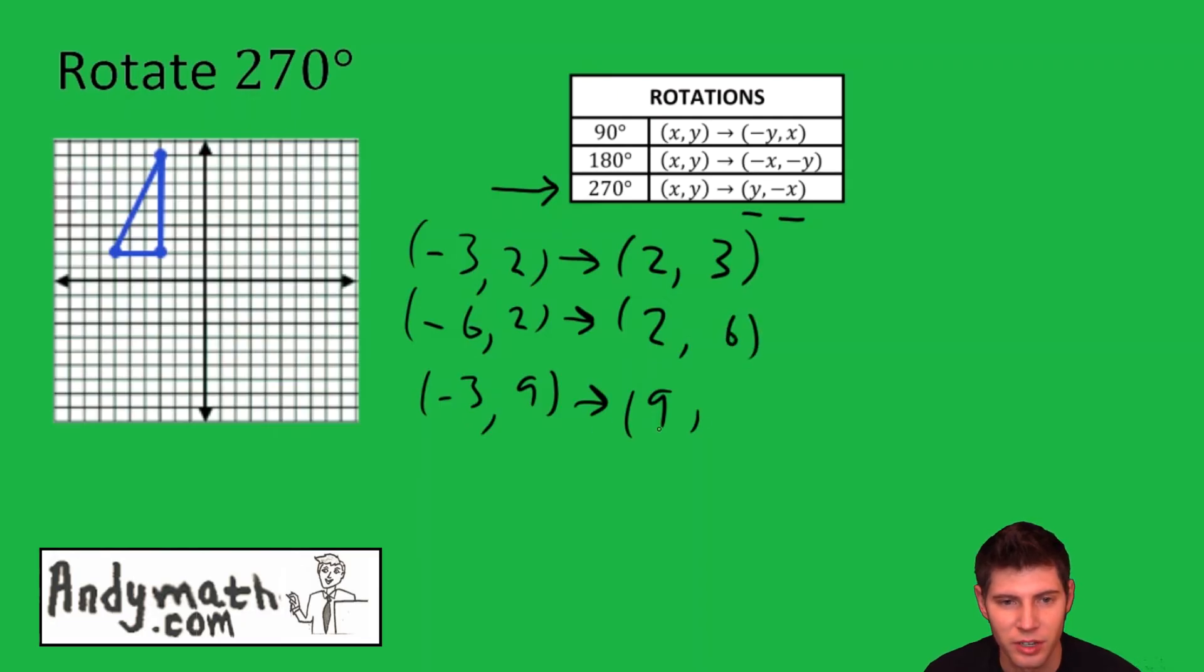Now we just plot the points that we just mapped into: two three, two six, and nine three. Then we're going to connect the dots.